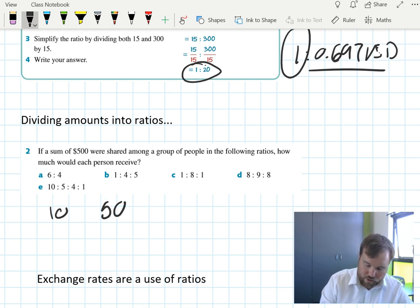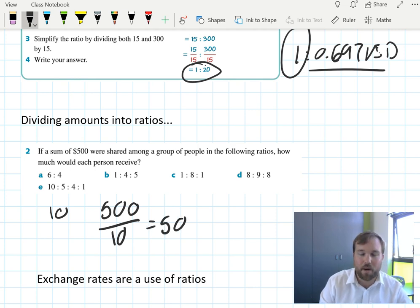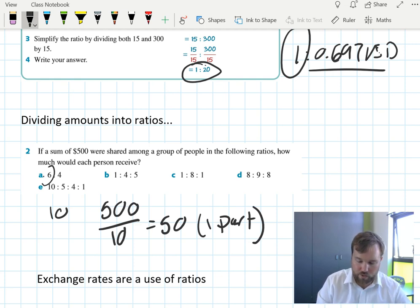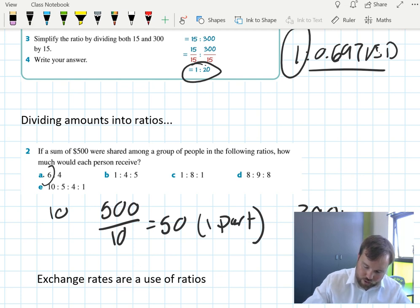10 parts, well, 500 divided by 10 is $50. Each part, that's one part, is $50. So if this person here is getting 6 parts, they're getting 6 times 50, 300. The other person is getting 4 times 50, 200. So that ratio is 300 to 200.